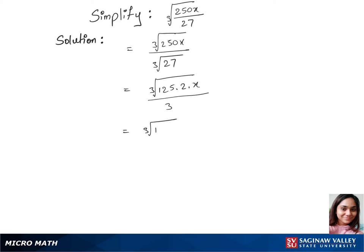Now we have cubic root of 125 times cubic root of 2x over 3. We just separated it.